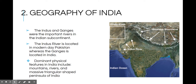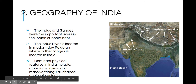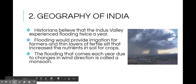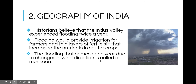The three reasons to settle in river valleys are water, soil, and protection. The Indus River is located in present-day Pakistan, whereas the Ganges River is located in India. Dominant physical features include mountains and rivers. Historians believe the Indus River Valley experienced reliable flooding twice a year that made the soil very rich, providing irrigation for farmers and thin layers of fertile silt. The flooding each year due to changes in wind direction is called a monsoon.